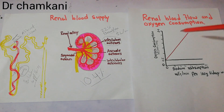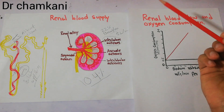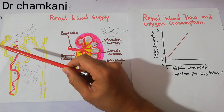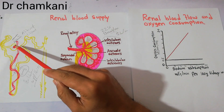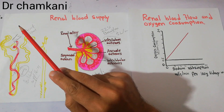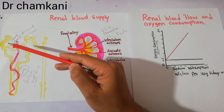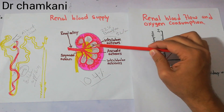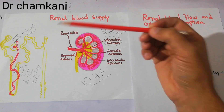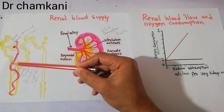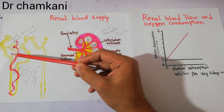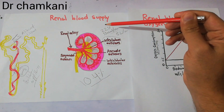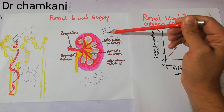Apart from bringing nutrients and removing waste, the main purpose of the high 22% blood flow to the kidney is to supply enough blood so that proper filtration can occur with proper pressure, and this process can occur multiple times. The kidney ensures that nutrients get reabsorbed into the peritubular capillaries and waste is excreted. For this purpose, blood flowing to both kidneys is around 22% or about 1100 ml per minute.